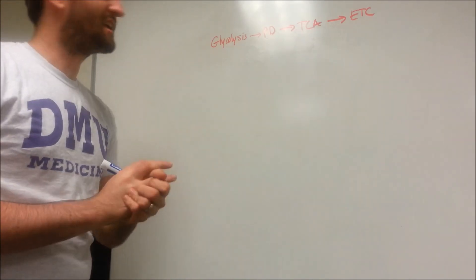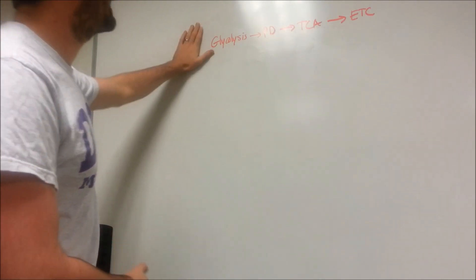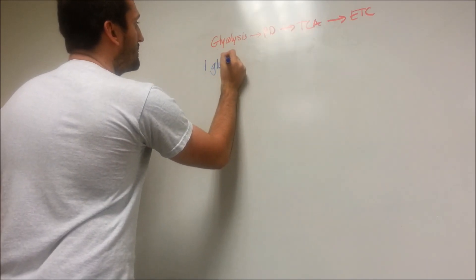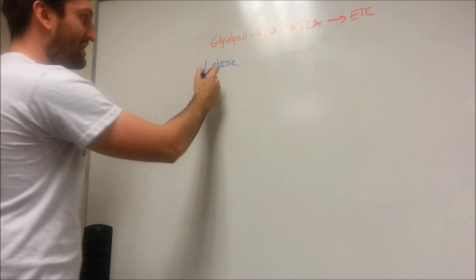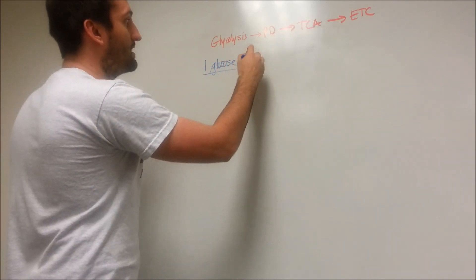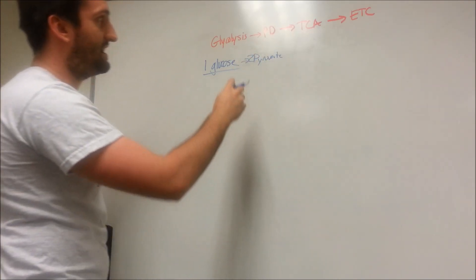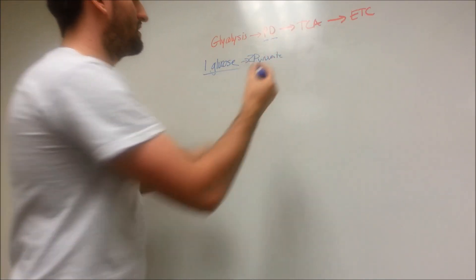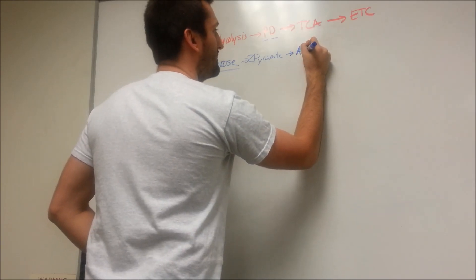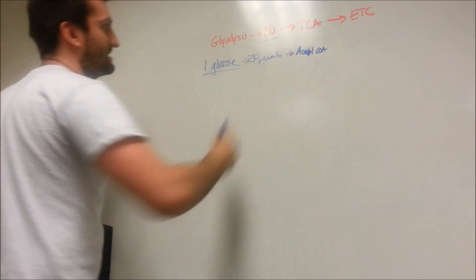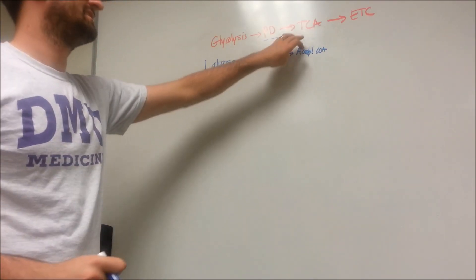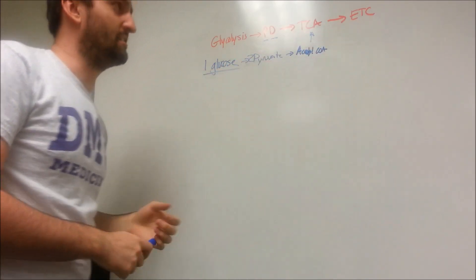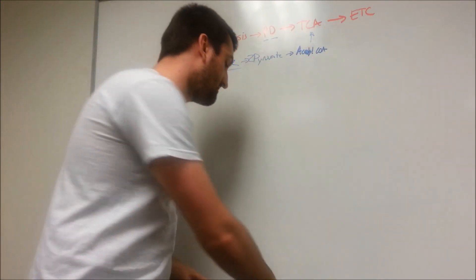All right everybody, welcome. We are going to talk about the TCA cycle today. Up here I have just a little roadmap of where we've been and where we're going. We started with one molecule of glucose, converted it into two molecules of pyruvate, which got converted by pyruvate dehydrogenase into two molecules of acetyl-CoA. Two molecules of acetyl-CoA enter into the infamous TCA cycle. Eventually we'll end up at the electron transport chain, also known as oxidative phosphorylation.